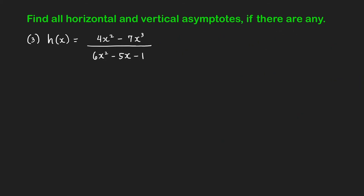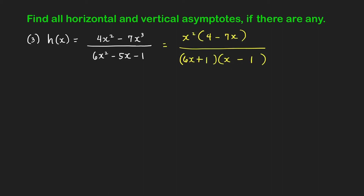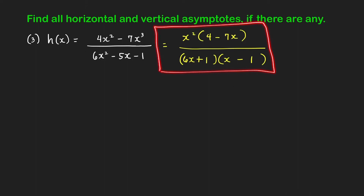For the last problem, we find the horizontal and vertical asymptotes of h of x. Factoring the numerator gives x squared times 4 minus 7x. The denominator factors as 6x plus 1 times x minus 1, since the sum of the cross terms gives negative 6x plus x equals negative 5x. There are no common factors between numerator and denominator, so we can proceed with our strategy.